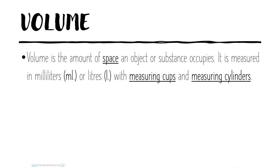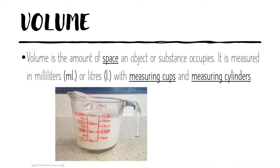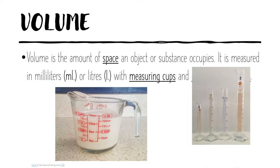Volume is the amount of space an object or substance occupies. It is measured in milliliters or liters and we can do it with measuring cups and measuring cylinders.